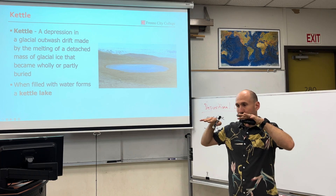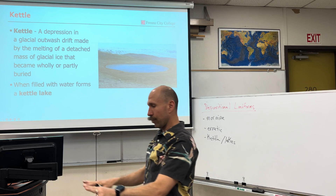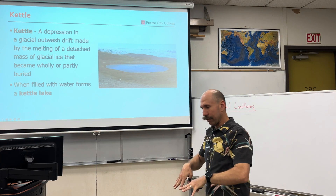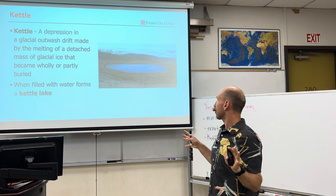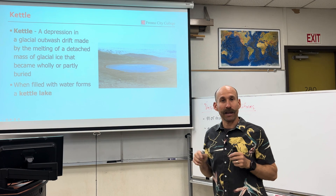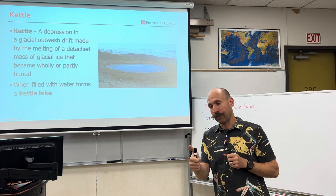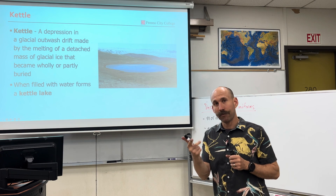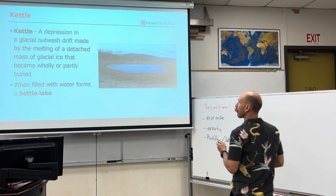We see erratics all over the landscape in areas where glaciers have been. Next are kettles and kettle lakes. First the glacier scoops a big hole into the ground, then it fills that hole in with some glacial till. Then the glacier melts and meltwater fills in that kettle. You have the erosion, the deposition forming a kettle, and then it fills with water creating a kettle lake.